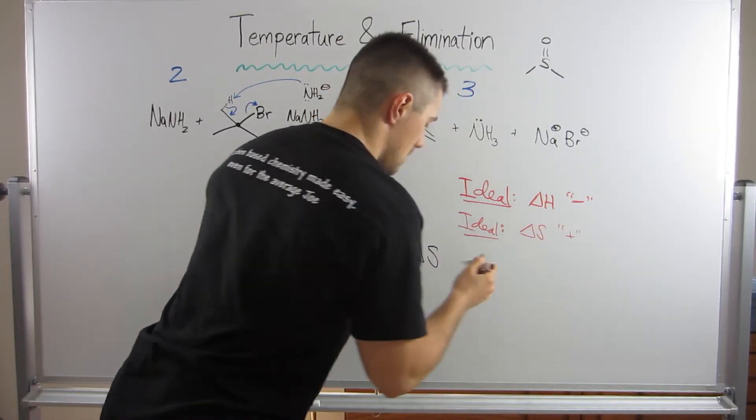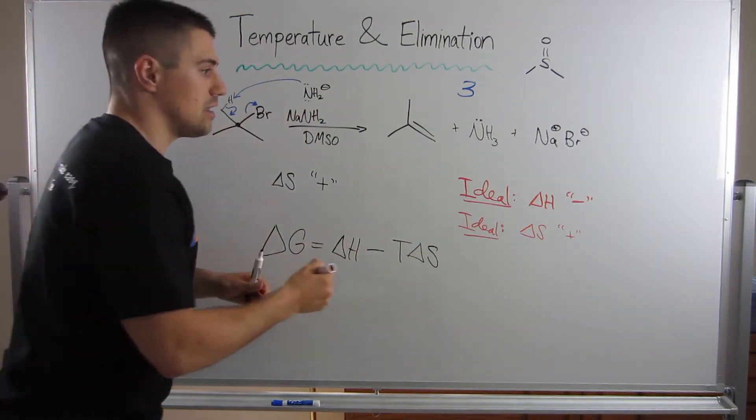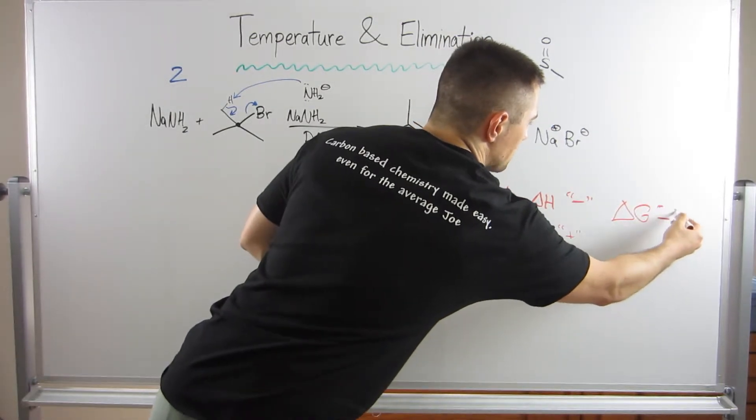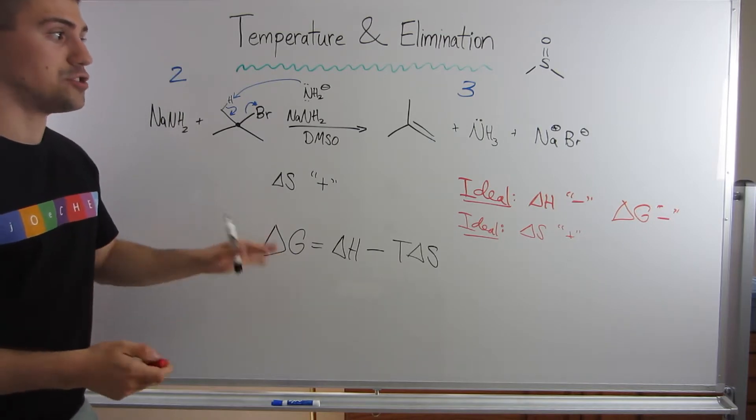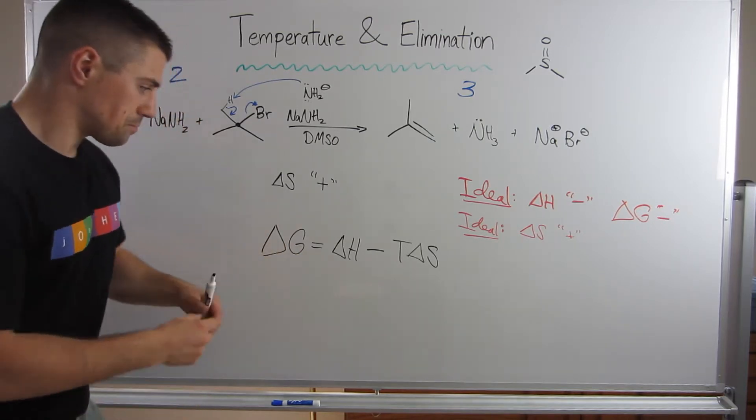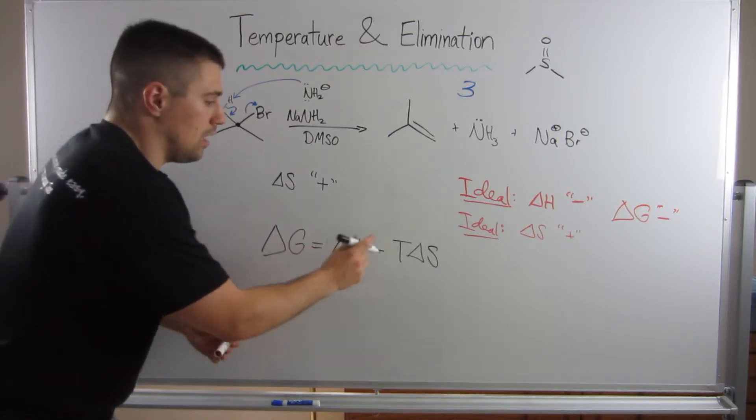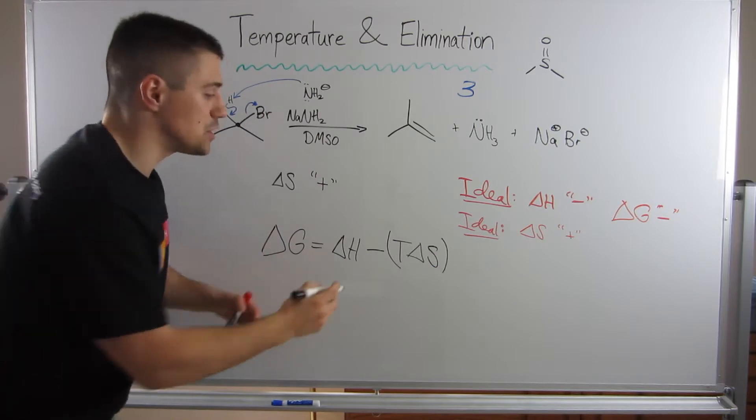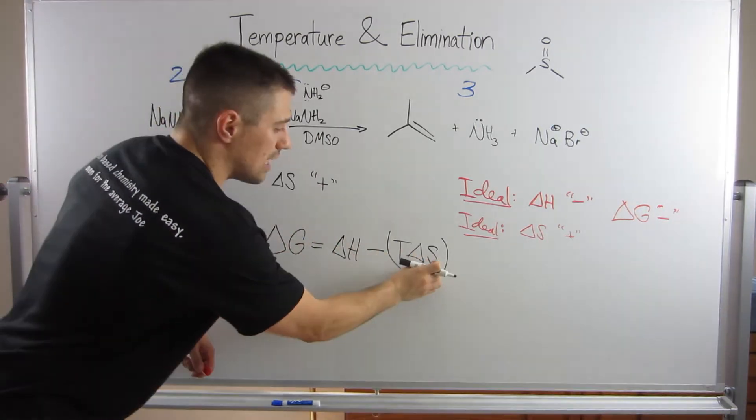Overall, we like Delta G to be negative. That is the overall goal because that means the reaction is spontaneous. It will happen. That's what we like to see for Delta G. If we look at this equation, if Delta H is negative, that's good for Delta G. If we think about this term, this negative sign is built into the equation.